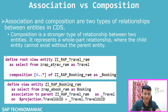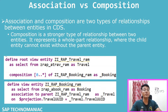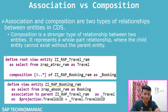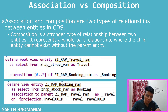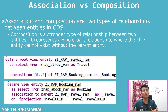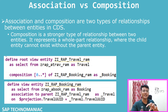What is composition? Composition is a stronger type of relationship between two entities where the child entity cannot exist without the parent. To define the composition, the syntax is slightly different - you select from the parent entity, then define a composition with the cardinality to the child entity. In the child entity, you define the association back to the parent. We will cover the programming details when we actually code this.